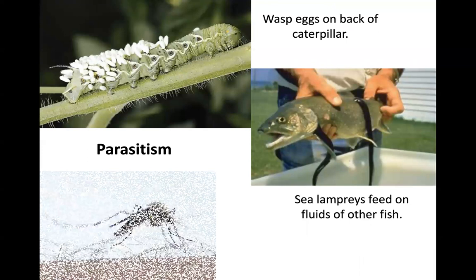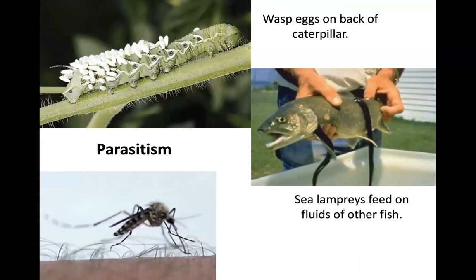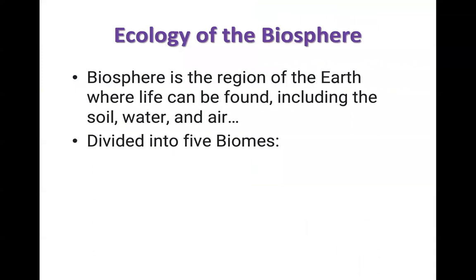Sea lampreys feeding on the fluids of other fish and mosquitoes biting humans can also be parasitic relationships — this can be a potentially harmful situation, especially if the mosquito is harboring parasites. We'll stop here and pick up with the ecology of the biosphere in the next class.